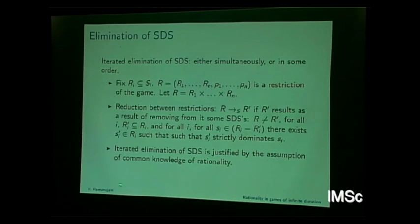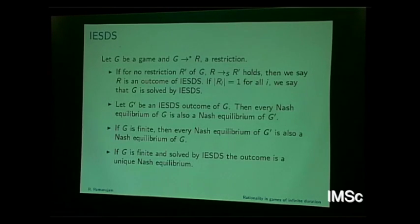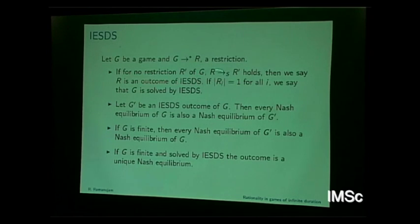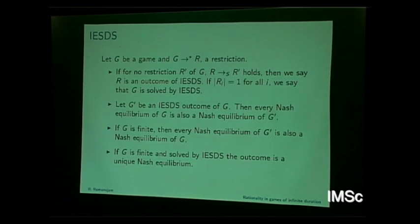This is justified by the assumption of common knowledge of rationality. If you take rationality to be the fact that a player would never play a strictly dominated strategy, an outcome is one where you have iteratedly removed strictly dominated strategies until you cannot do any further. If you are left with a single term for every player, then the game is solved by iterated elimination of strictly dominated strategies.